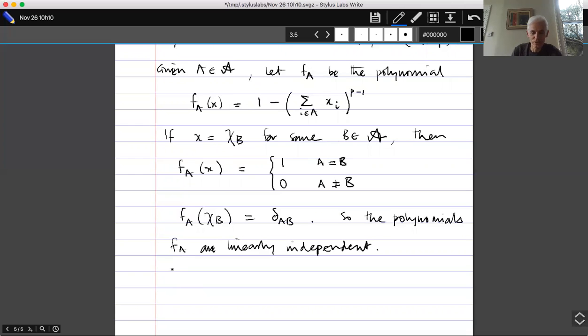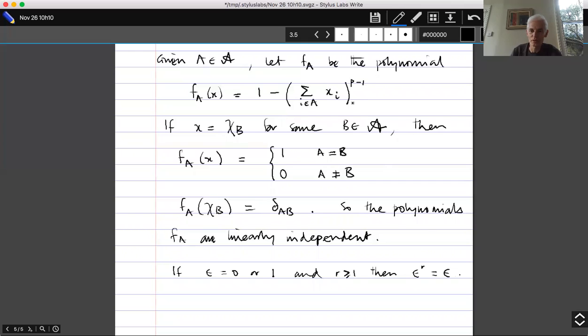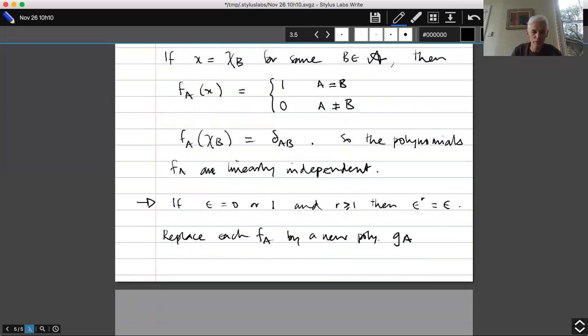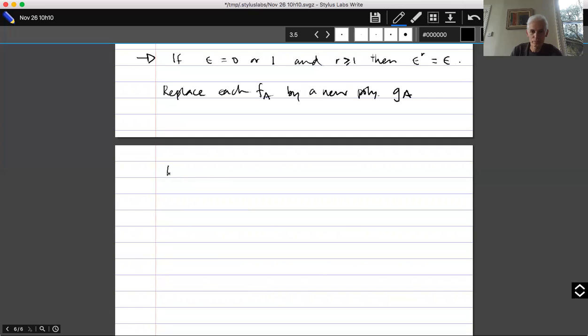Fortunately a small extra idea rescued us from this disappointment, and that is that it's a very very useful fact that if epsilon equals 0 or 1, then—say and r greater than or equal to 1—epsilon to the r equals epsilon. So what that's going to allow us to do is to replace the f_a's by some other polynomials, by some other polynomials in which no x_i appears with power greater than one. So this is the sort of clever observation.